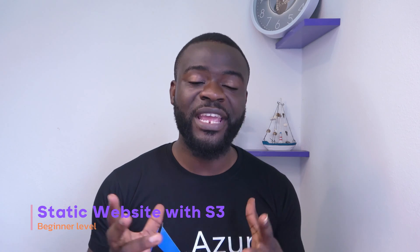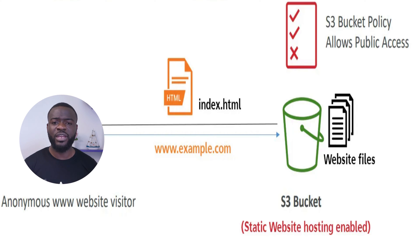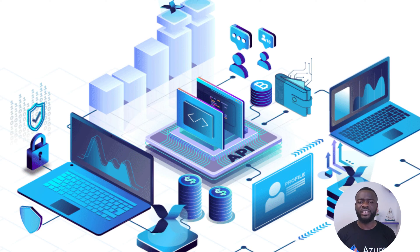The very first project I recommend is setting up a static website on AWS using AWS S3. S3 is one of the storage offerings from Amazon Web Services, and one of its basic functionalities is to set up a static website. You can store the website on S3 and use other services to host and make it accessible over the internet.